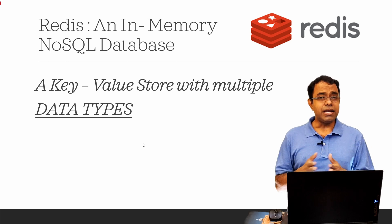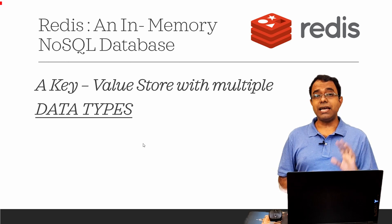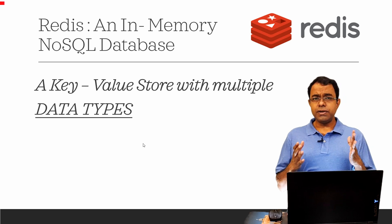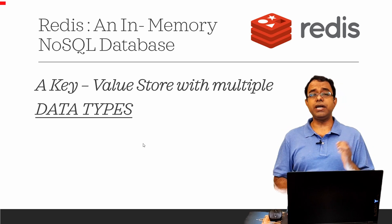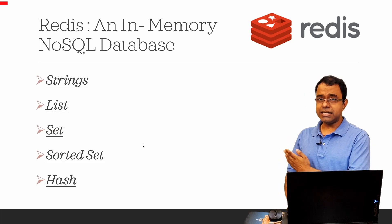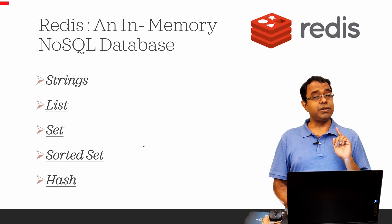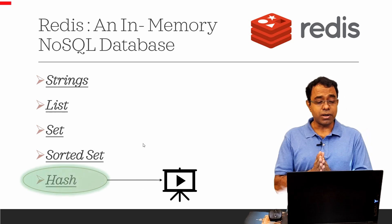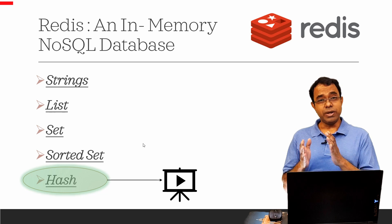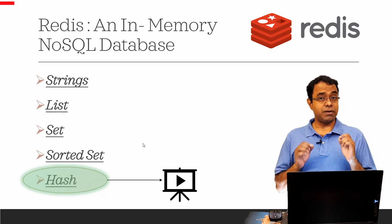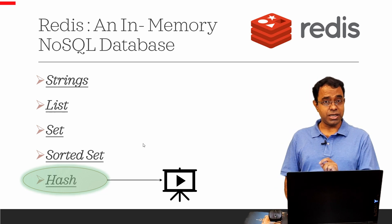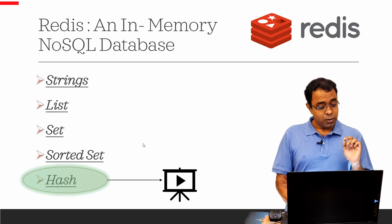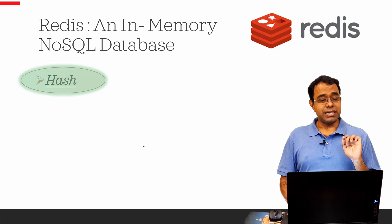Hello everyone. Welcome to the video series on Redis, an in-memory key-value data store. Over the past few videos we have been talking about various data types of Redis, and today we are going to talk about hash. We have already talked about string, list, and set — you can see previous videos of this series for more. I will talk about sorted set in the upcoming video. Now let's go ahead and understand what hash is.